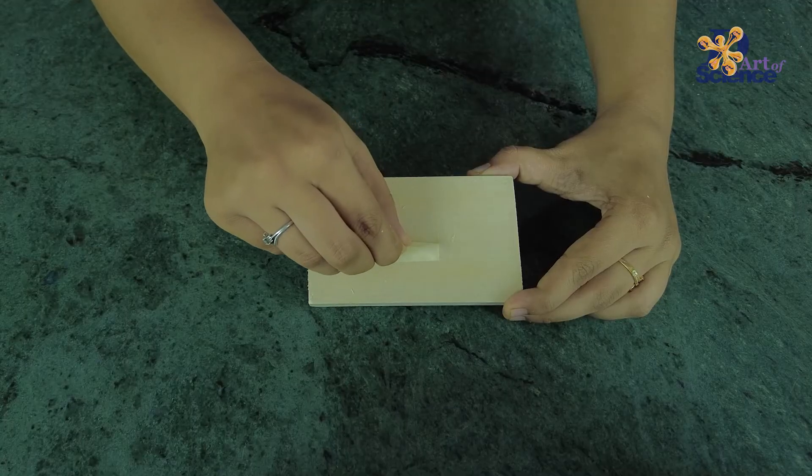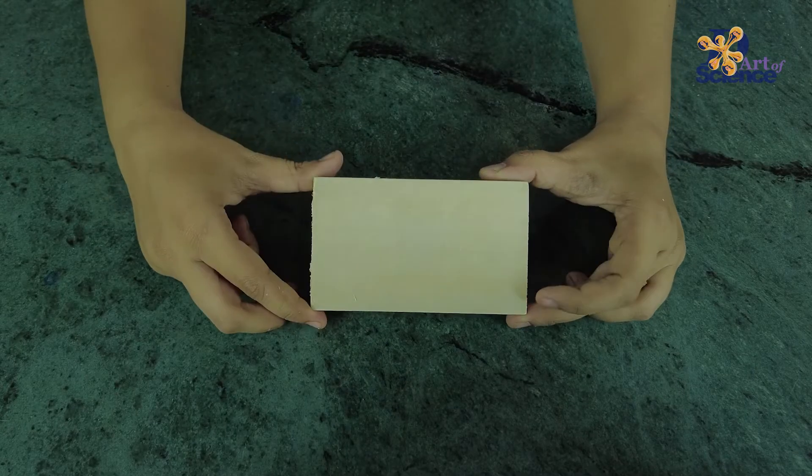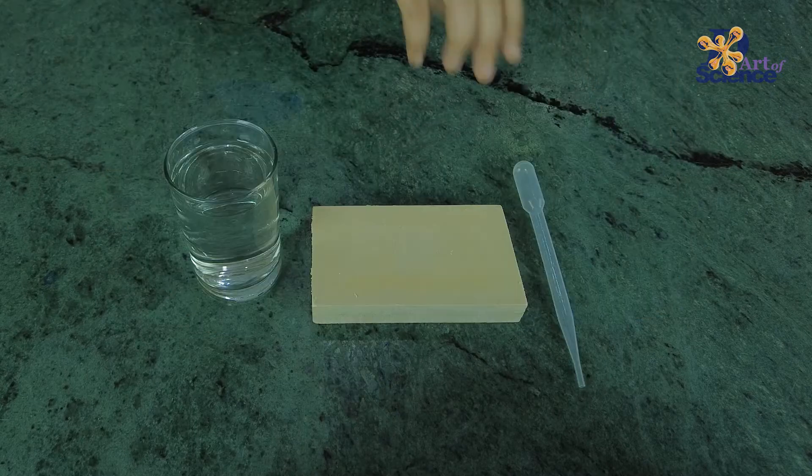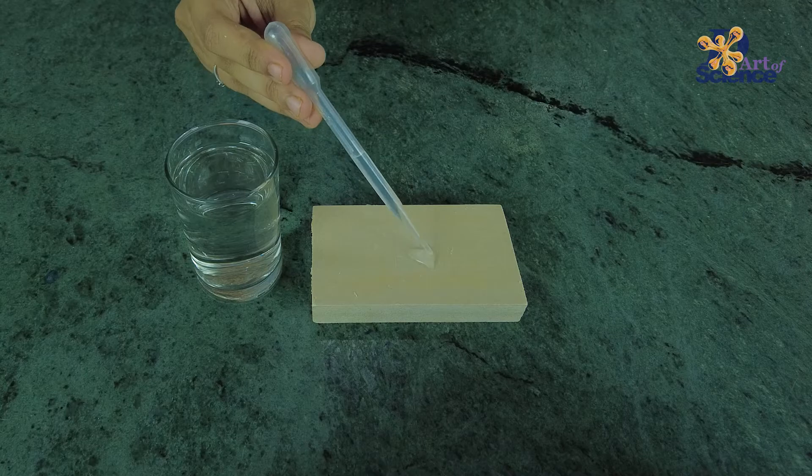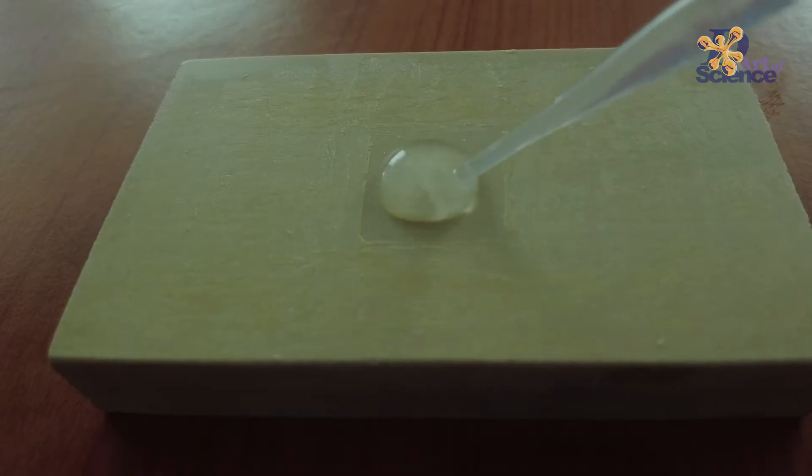Remove the tape. Now, this entire block has candle wax except this shape. Start pouring water with a dropper and watch the water confining itself to this shape. The surface tension of water is so high that even after adding more drops, the water will still maintain its shape.